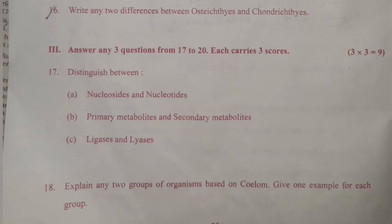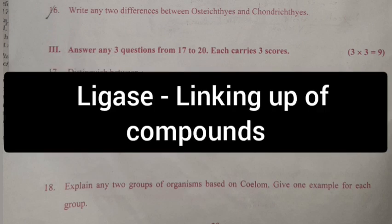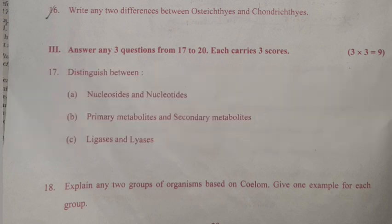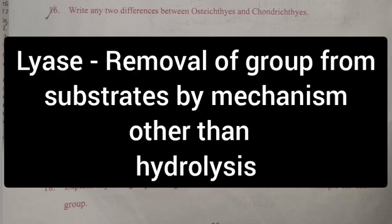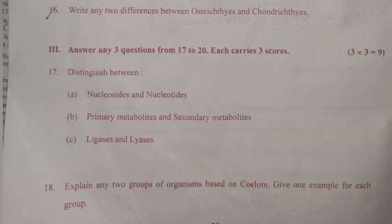Question 17B: Primary metabolites and secondary metabolites. Answer: Primary metabolite — directly involved in normal growth, development and reproduction. Secondary metabolite — not directly involved in these processes, but usually has an important ecological function. Question 17C: Ligases and lyases. Answer: Ligase — linking of compounds. Lyase — removal of groups from substrates by mechanism other than hydrolysis.